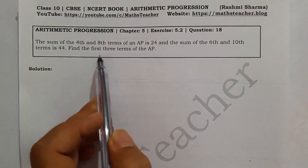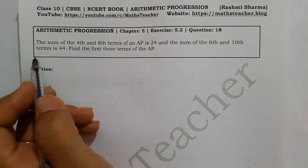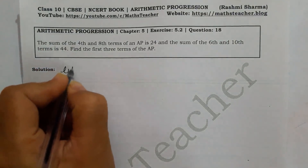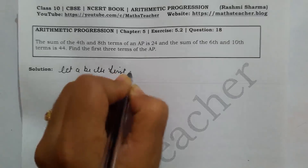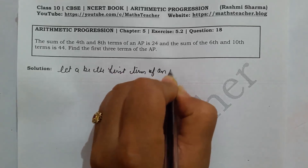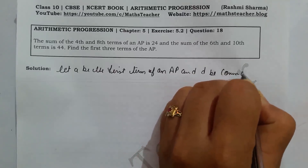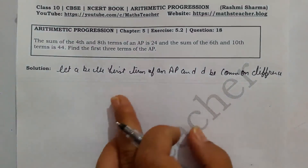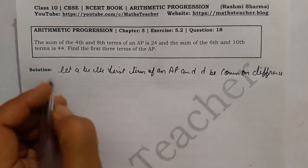So here we have the AP not given. Let the first term be 'a' and the common difference be 'd'. Then the AP will become: a, a+d, a+2d, and so on.